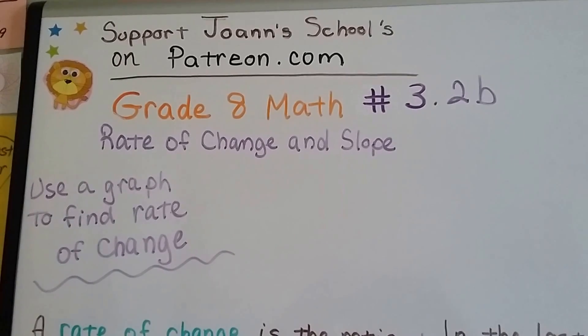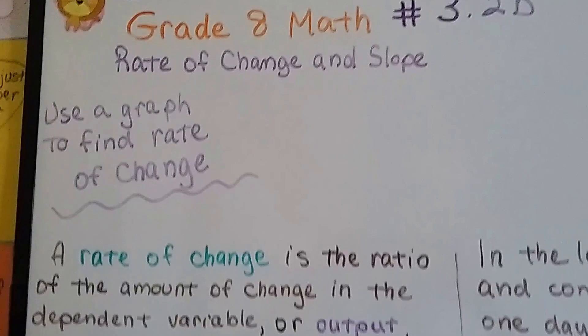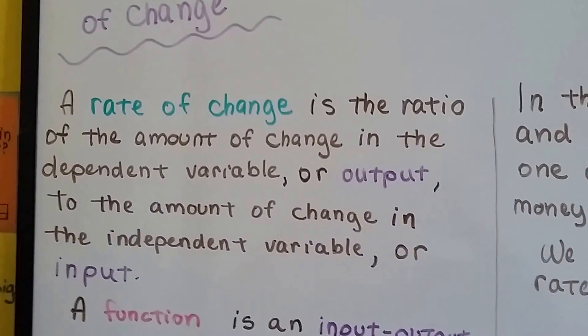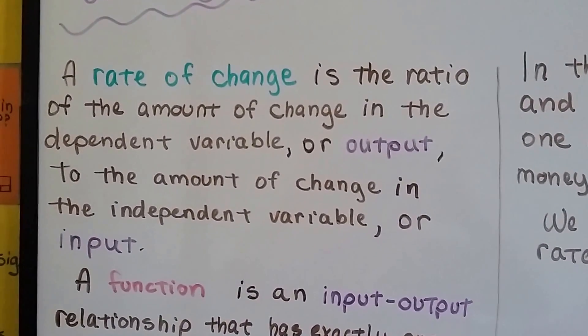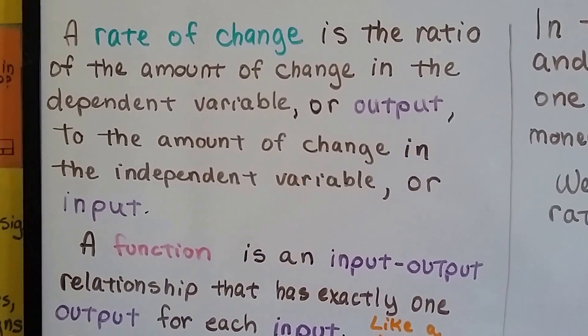Grade 8 math number 3.2b, use a graph to find rate of change. In the last video we talked about rate of change as a ratio of the amount of change in the dependent variable or output to the amount of change in the independent variable or input.